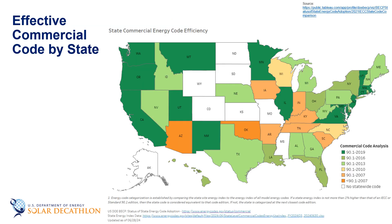On this slide we show a map of commercial energy codes in the United States. Many of these states have not directly adopted ASHRAE 90.1 but may make modifications. The version listed is an approximation to the closest version that each state has adopted in terms of energy stringency. The states shown in white have no statewide building code; however, local governments can adopt and enforce their own set of codes.